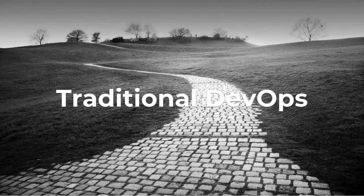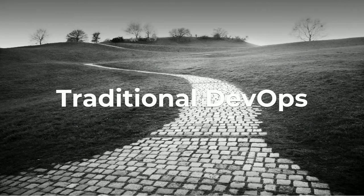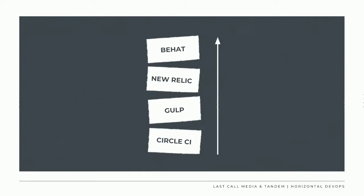The session title is a little bit confusing, so we're going to unpack what we mean by horizontal DevOps. We're working in contrast to traditional DevOps, which is the act of building a yellow brick road to production. You have local developers pushing code, running some kind of testing process that ends up at production. As you're building this, you construct a pipeline — you might start with CircleCI, then add Gulp, then New Relic, and some testing. That pipeline develops over time as a single vertical stack.